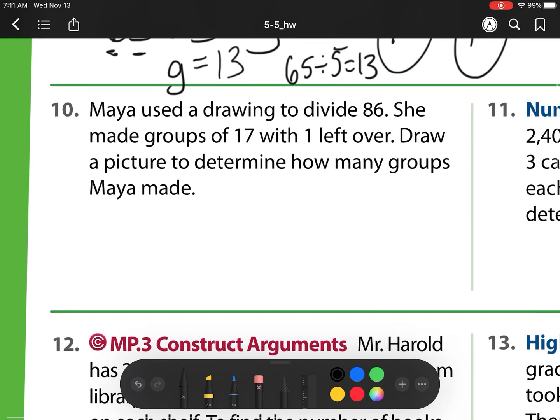Moving on to number 10 now. Maya used a drawing to divide 86. She made groups of 17 with one left over. Draw a picture to determine how many groups Maya made. Well, here I see I have 17. So what I'm going to do is I'm going to check. So I start with this picture of 17. She made groups of 17. So that's going to have 1, 2, 3, 4, 5, 6. Oops, I'm sorry. 10. 1, 2, 3, 4, 5, 6, 7. So there's 17. And I'm going to keep making those groups until I get to 85. I know it's 85 because there's that 1 left over. And 85 plus that remainder will be that 86.